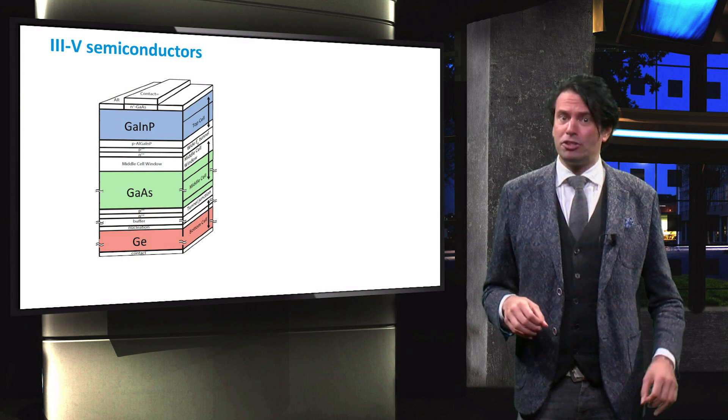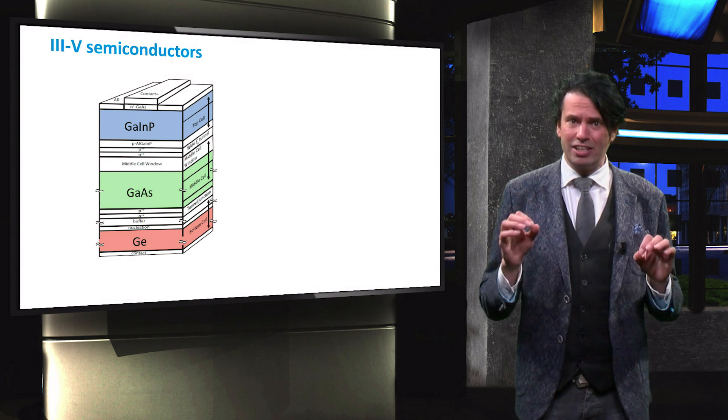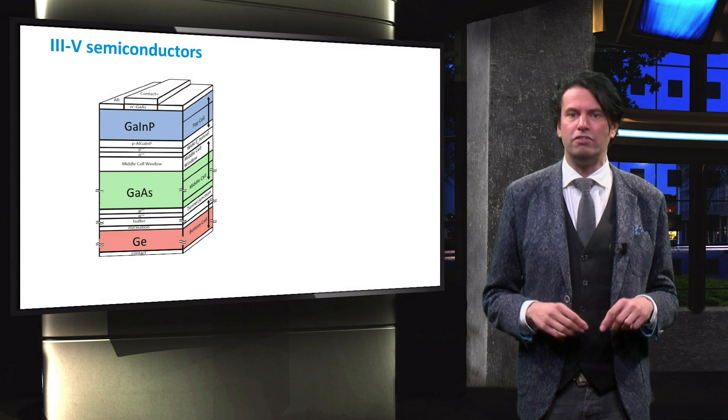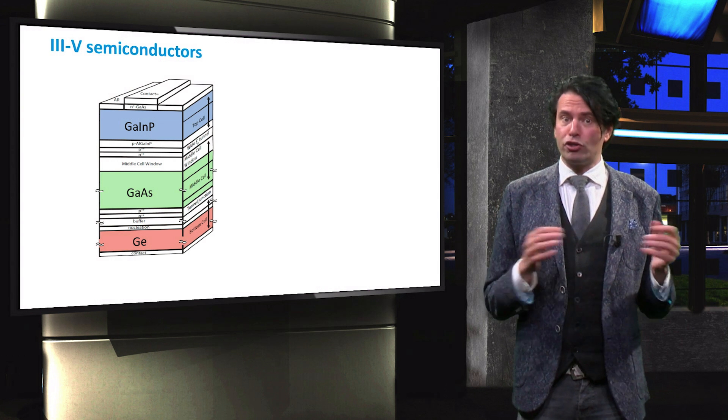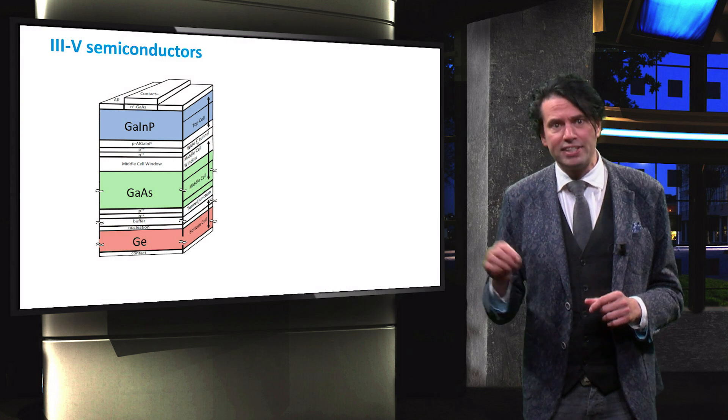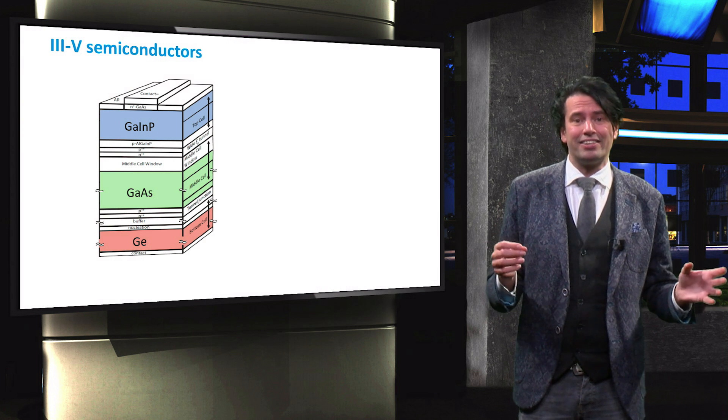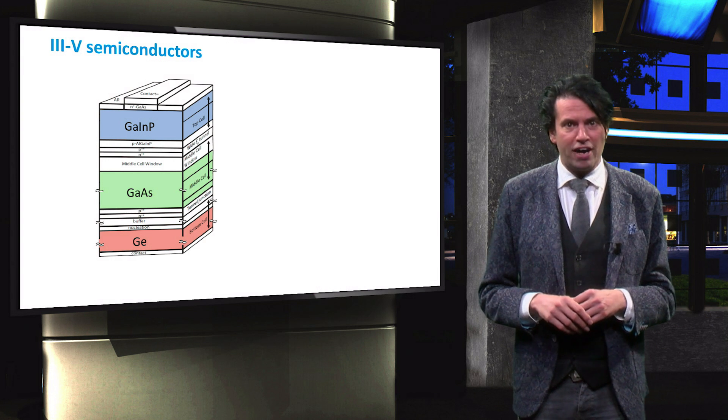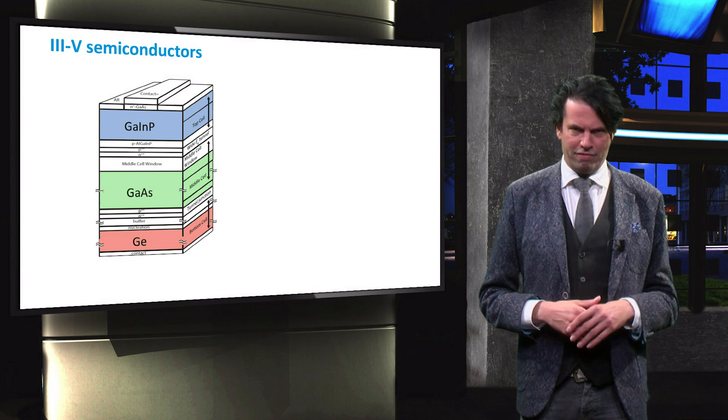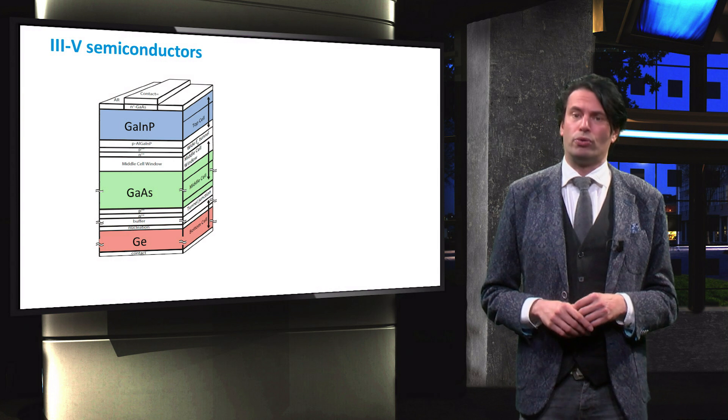However, the germanium substrate is a relatively thick and heavy component that significantly increases the weight of the device. Researchers have therefore investigated the use of different materials to replace the heavy germanium substrate. A hybrid crystalline silicon-III-V multi-junction device has for example been investigated. This hybrid device will be discussed in the final week of this course.